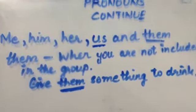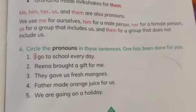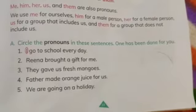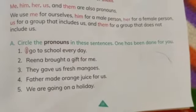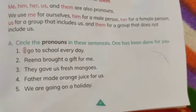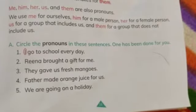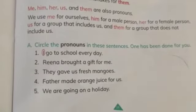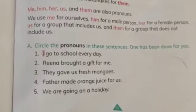I hope you have understood till here. Now come to page number 39. We will do this exercise. I will do one point, and one point is already done for you. The question is: circle the pronouns in these sentences. One has been done for you. You have to circle all the pronouns that you have studied till now.